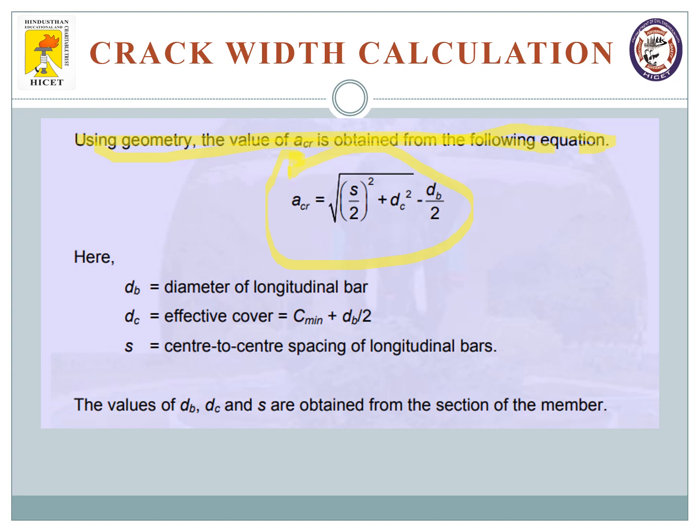This gives more of a mathematical approach where ACR is given by root of ((s divided by 2) squared plus dc squared) minus db divided by 2, where db is the diameter of longitudinal bars.